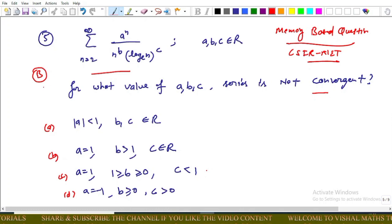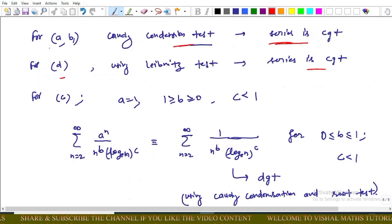Actually, this is a part B question. So for given options, I will explain one by one. For given option a comma b, we use Kochi condensation test. That is, using this test, this series is convergent. And for option D, using Leibniz test, this series is again convergent because this is an alternating series and satisfies all the conditions of Leibniz test.